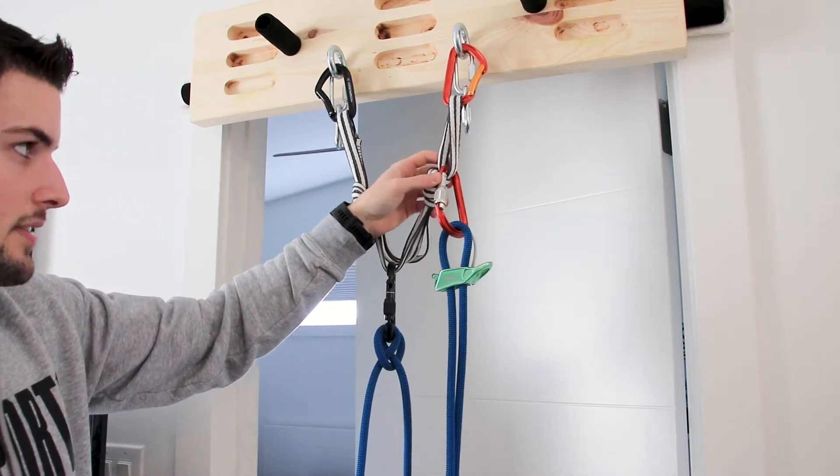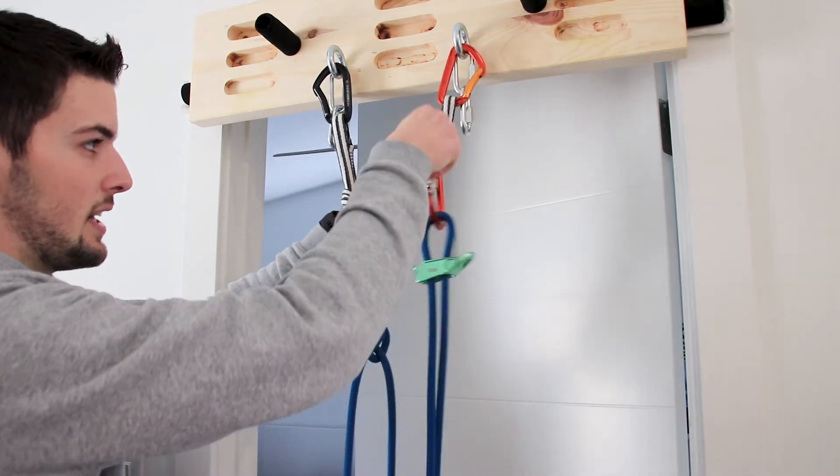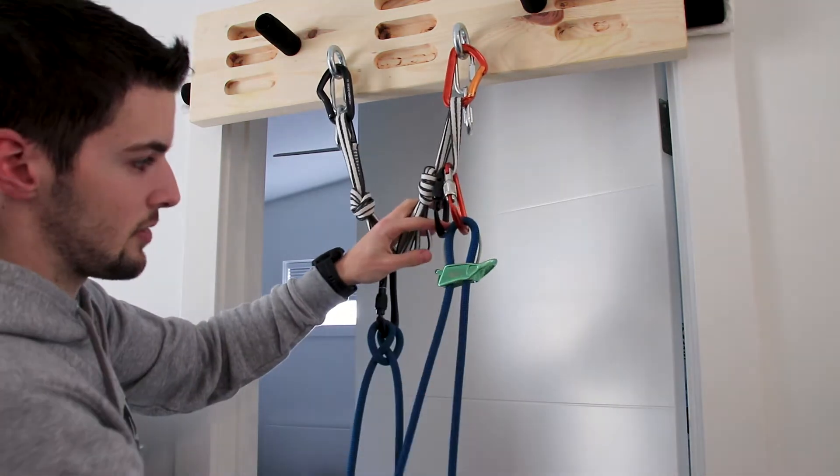So once we have the rope started through the belay device we're going to take one more carabiner and put it behind that and this is going to be our brake strand redirect.